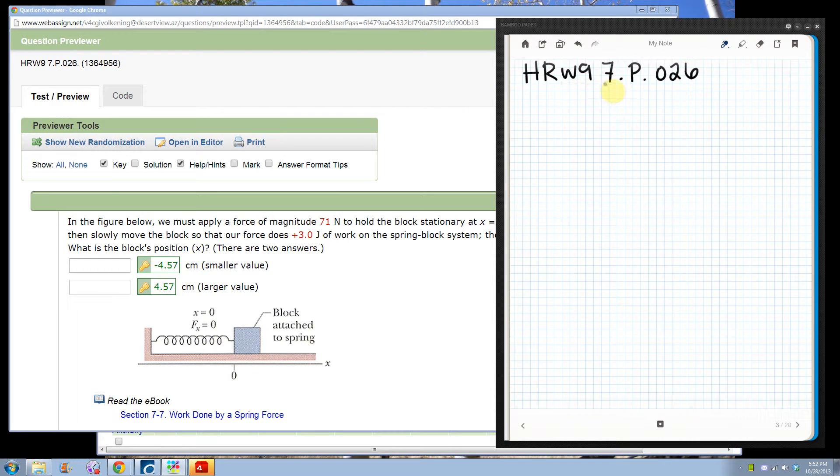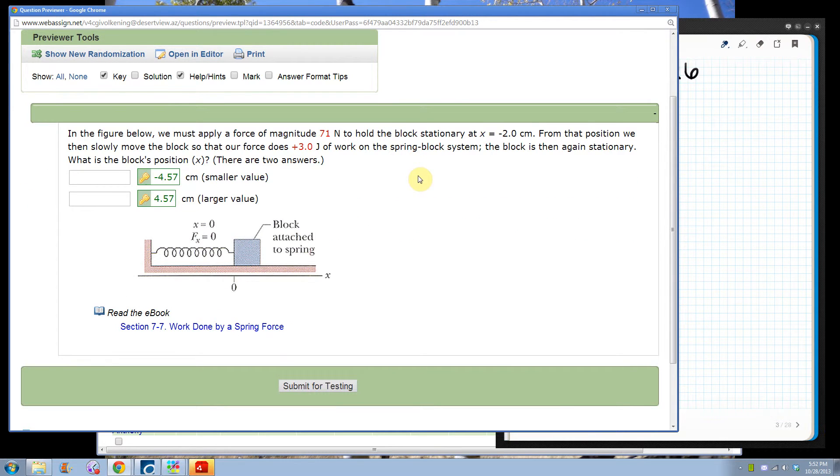This is problem HRW97P026. So, here we go. In the figure below, we must apply a force of magnitude 71 newtons to hold the block stationary at x equals negative 2 centimeters.